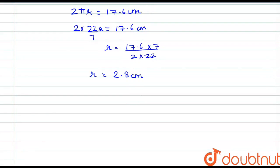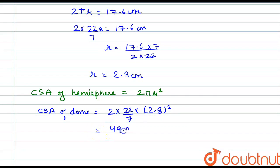Now we know that the curved surface area, that is the CSA of hemisphere, is equal to 2πr square. So the curved surface area of dome would be 2 into π is 22 by 7 into r square is 2.8. The curved surface area of dome comes out to be 49.28 cm².